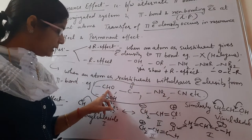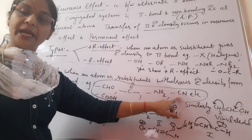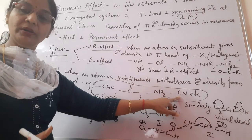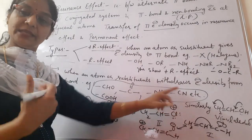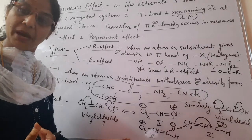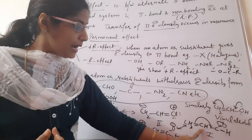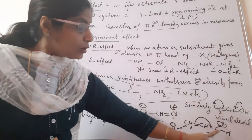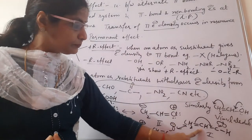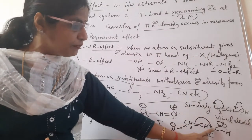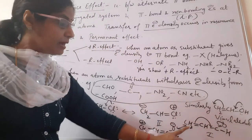Examples of groups showing minus R effect include aldehydic, carboxylic, ketonic, nitro, and cyano groups. When these groups are attached adjacent to a carbon atom having a pi bond, they withdraw electron density towards themselves. For example, when an aldehydic group is adjacent to a carbon having a pi bond, since the carbonyl group is electron withdrawing, it withdraws electron density from that carbon. The pi bond shifts towards the aldehydic group, which is why it shows minus R effect.